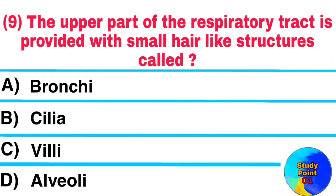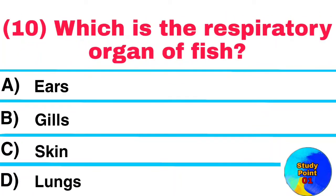Question No. 9. The upper part of the respiratory tract is provided with small hair-like structures called? Answer: Cilia. Question No. 10. Which is the respiratory organ of fish? Answer: Gills.